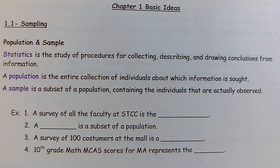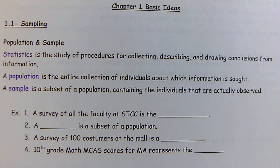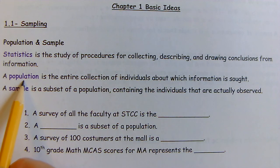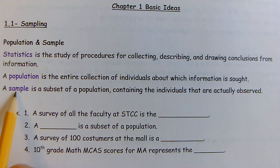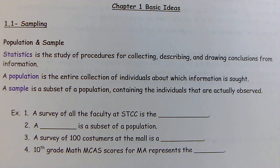Unit 1, Chapter 1: Basic Ideas. Section 1.1 is sampling. The difference between a population and a sample is very important and we will be using it all semester. Statistics is the study of procedures of collecting, describing, and drawing conclusions from information. A population is the entire collection of individuals from which the information is sought. A sample is a subset of a population containing the individuals that are actually observed.